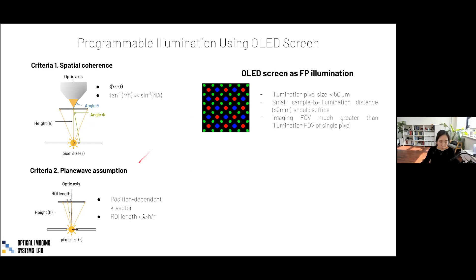We checked these two criteria for our OLED screen illumination. The illumination pixel size of most modern OLED screens is very small — less than about 50 microns — meaning we can work with a very small sample-to-illumination distance, on the order of millimeters, basically placing the sample slide directly on top of the screen. However, two problems emerge: the ROI size has to be pretty small, and because these OLED pixels have a very limited angular field of view, turning on a single pixel only illuminates a small part of the entire field of view.